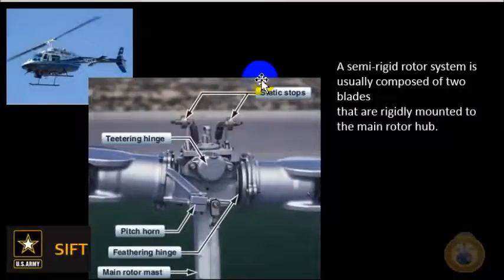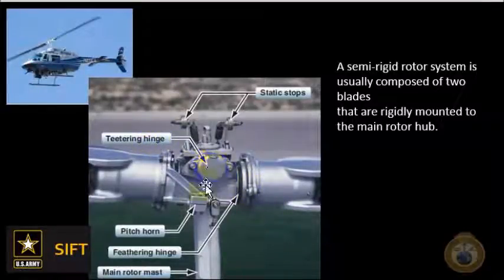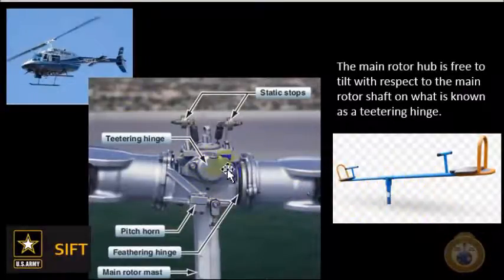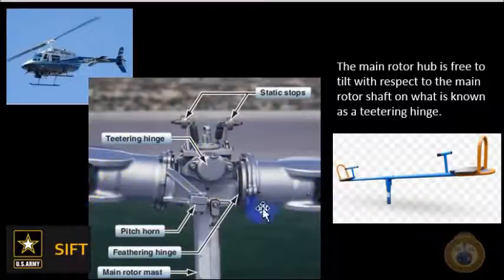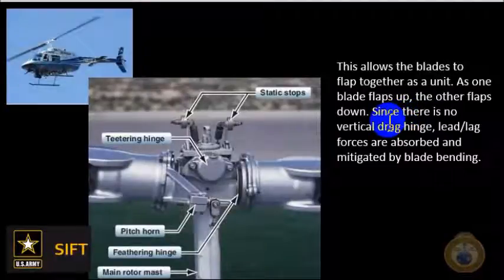This is a semi-rigid rotor system. Here we have a helicopter that has a semi-rigid rotor system — usually you can identify the two blades. Basically this system teeters. We have what we call a teetering hinge that allows the blades to rock like a seesaw. So when one blade goes down, the other goes up. Just like a seesaw — if two kids are sitting on it, this kid goes up, this kid goes down. So the blades flap together as a unit.